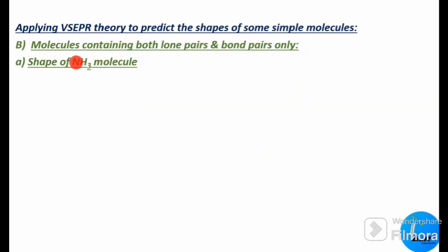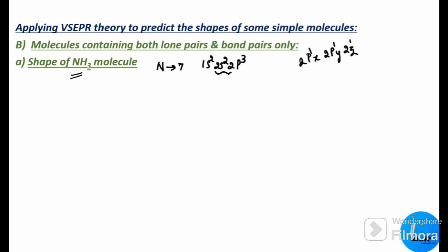The first molecule we are going to see is ammonia. The central nitrogen atom has atomic number 7 and its electronic configuration is 1s2, 2s2, 2p3. That 2p3 we can write as 2px, 2py, 2pz, each having one electron. Nitrogen possesses five valence electrons, and it shares three of those valence electrons with three hydrogen atoms.